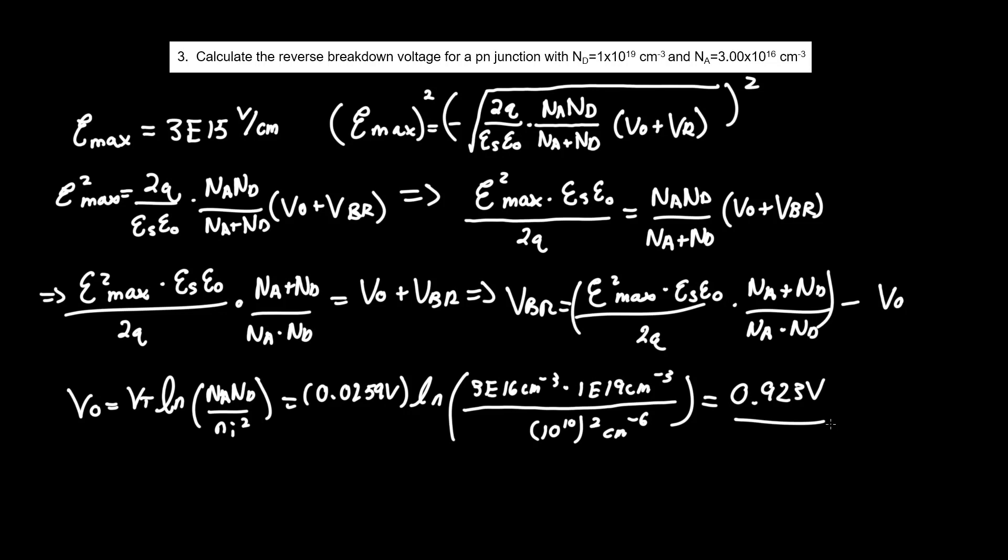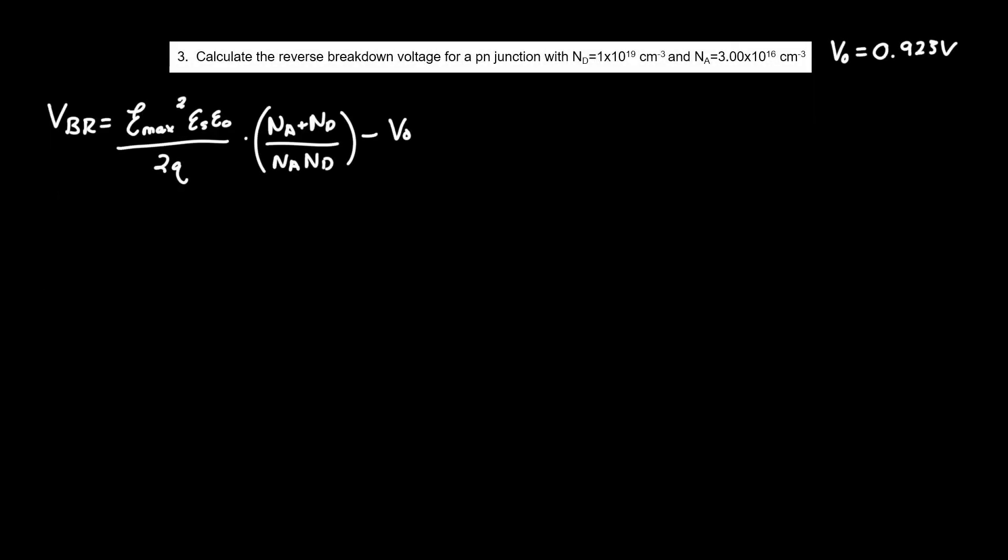So now we can evaluate the rest of the problem. Now that I've cleared some space, all that's left is to plug in all the numbers into the variables, including the V0, which I moved up to the top right here. So V breakdown equals 3E5 volts per centimeter squared times 11.8. In some other textbooks, they'll say 11.7, but for the sake of this problem, let's just assume 11.8.